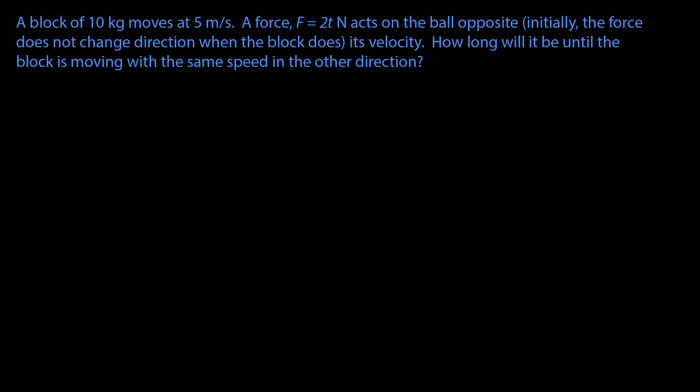In the next one, I have a block of 10 kilograms moving at 5 meters per second. This time, my force is varying as a function of time. It's equal to 2t newtons, and it also acts on the ball in the opposite direction. How long will it be until the block is moving with the same speed in the other direction? We're told that initially the force does not change, that it's initially opposite the motion, and that the force does not change direction when the block does. So that's just saying the force acts in the same direction during the entire problem.